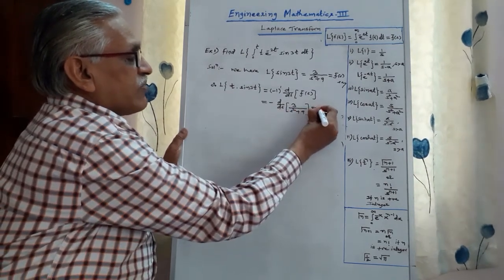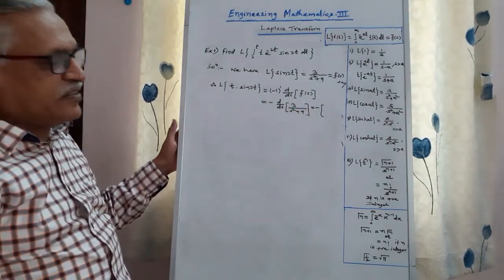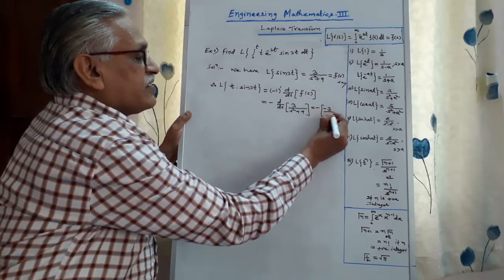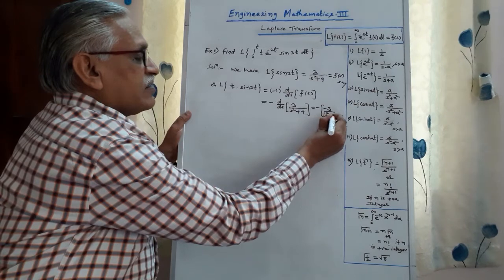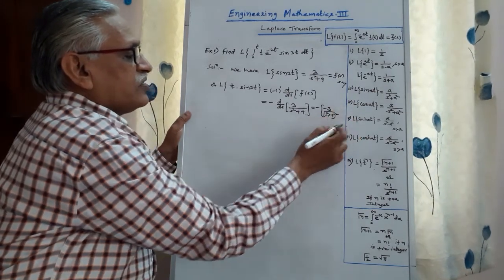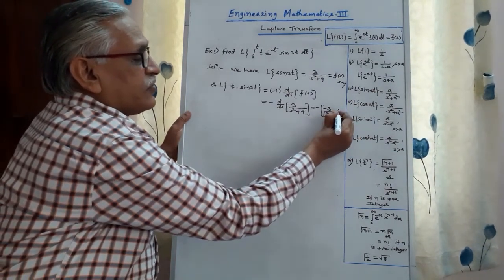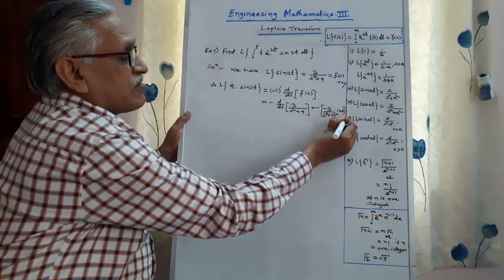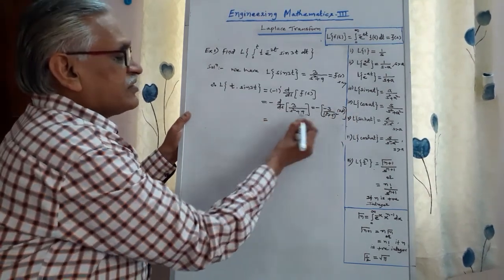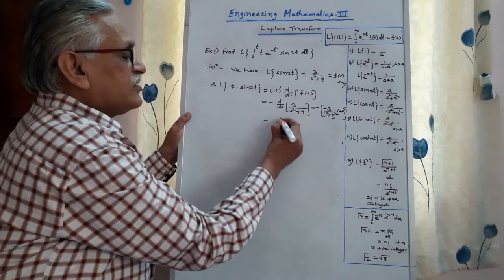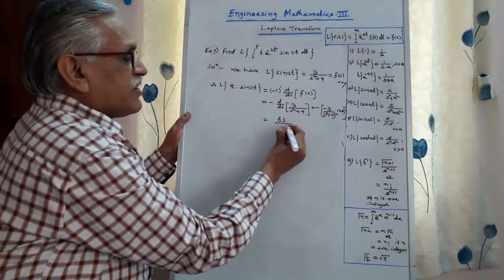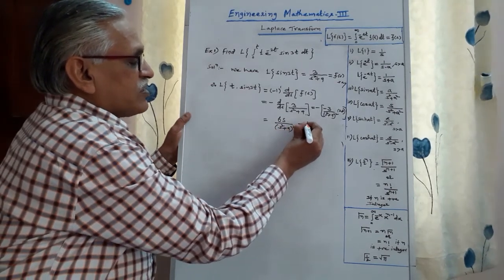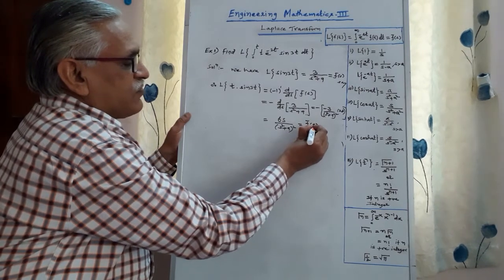Therefore it is equal to minus the derivative of 3/(s² + 9). Using the chain rule, the derivative of 1/x is −1/x², so we get −3 divided by (s² + 9)² times the derivative of s², which is 2s. Simplifying, the negatives cancel to give 6s/(s² + 9)². We call this the new f̄(s).